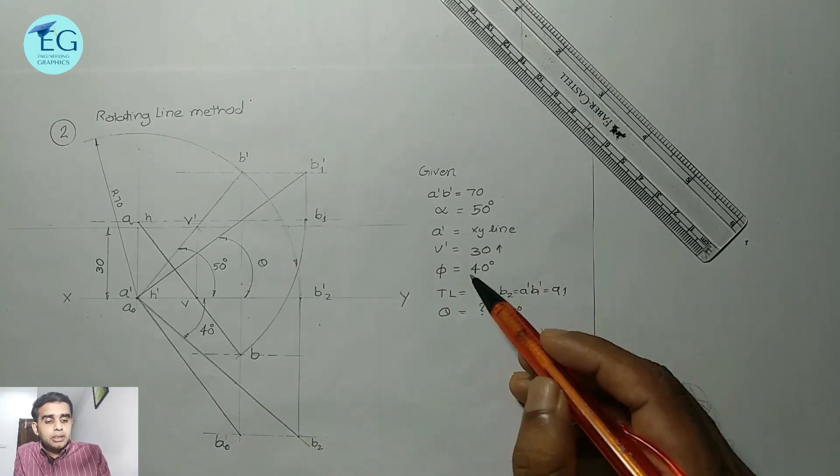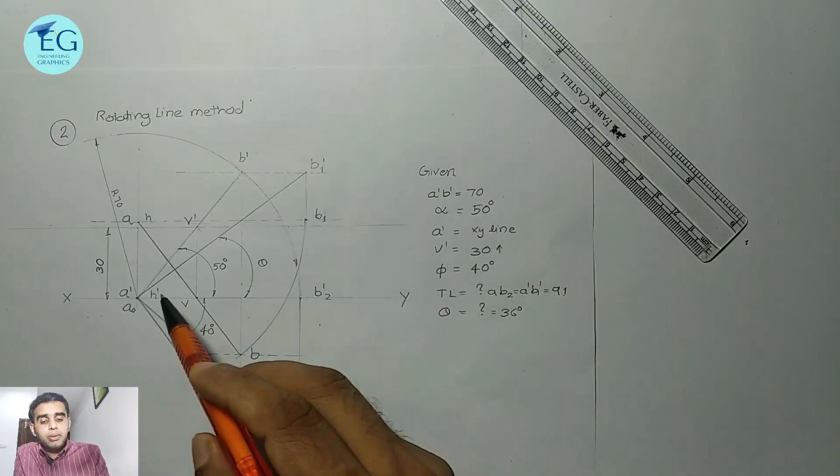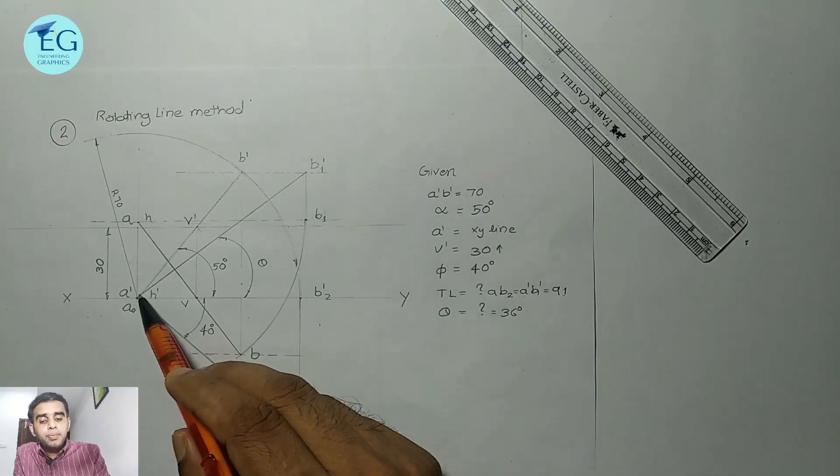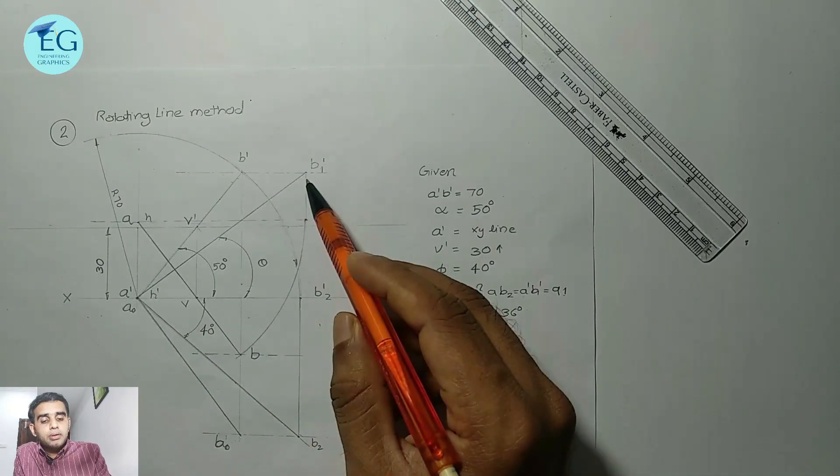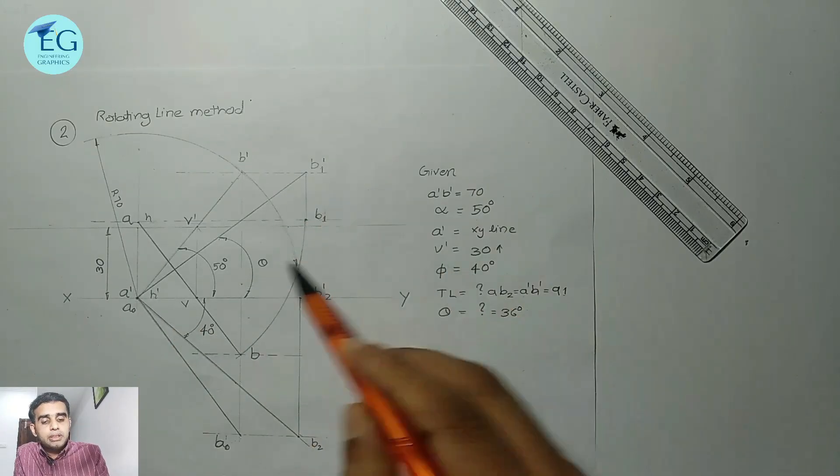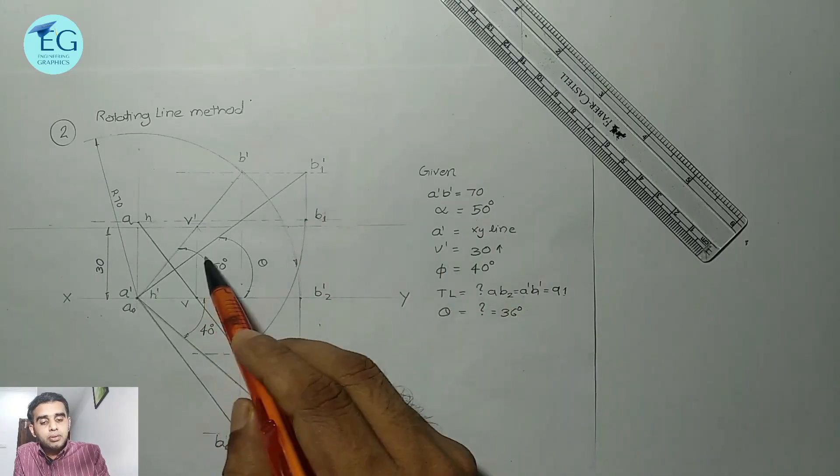The inclination angle is 40 degrees. Here, phi is equal to 40 degrees and theta is equal to 40 degrees.